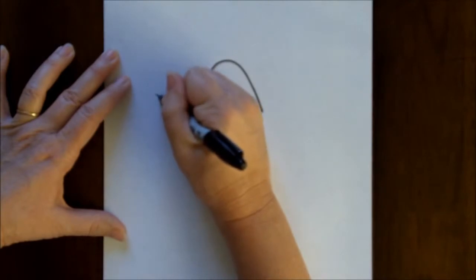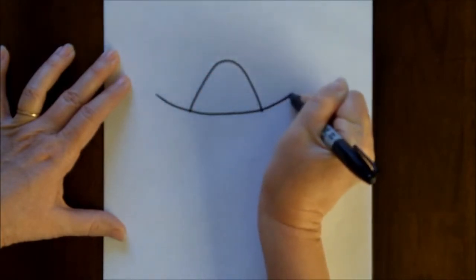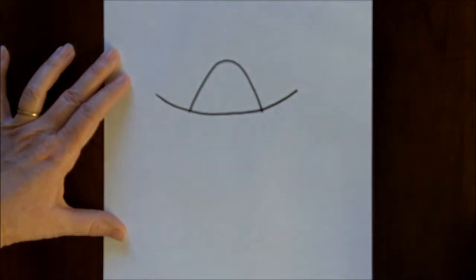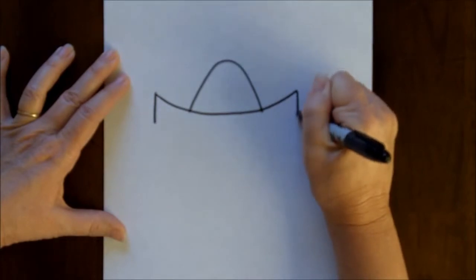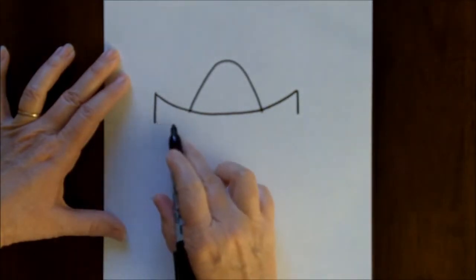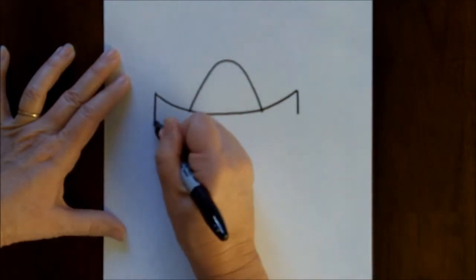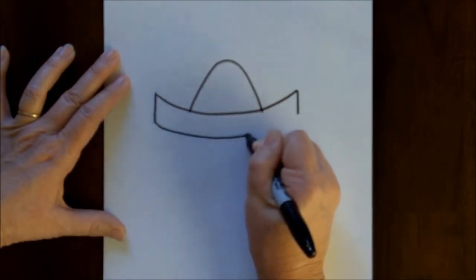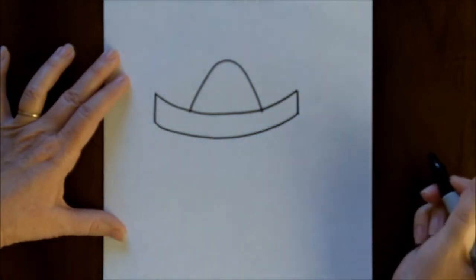Now we're going to make a curved line that touches both ends of that upside down U. We're going to make some straight lines coming down, and then we're going to make another curved line that follows the first curved line.